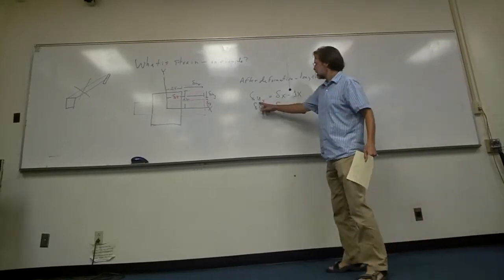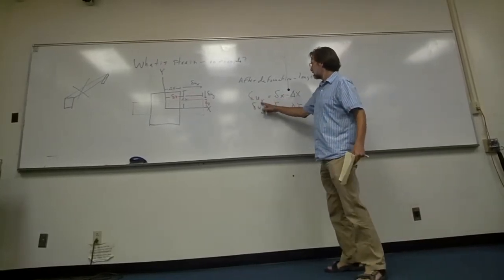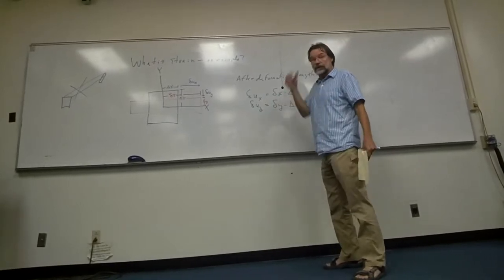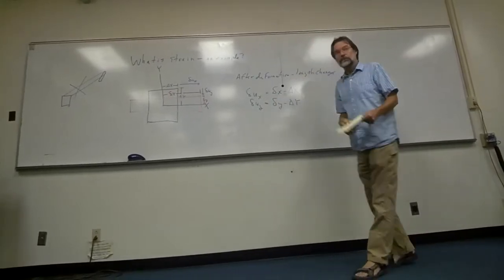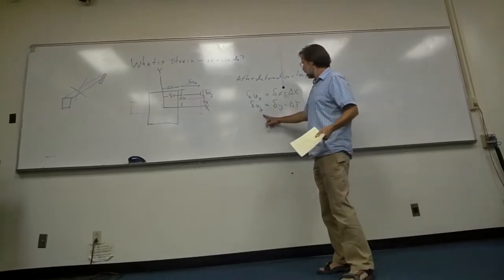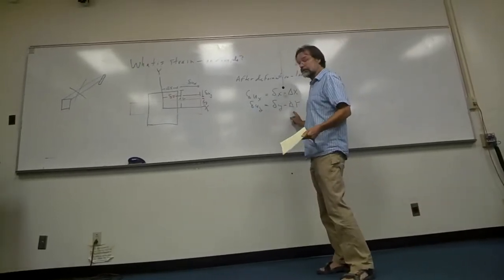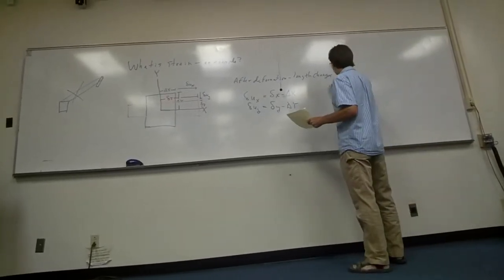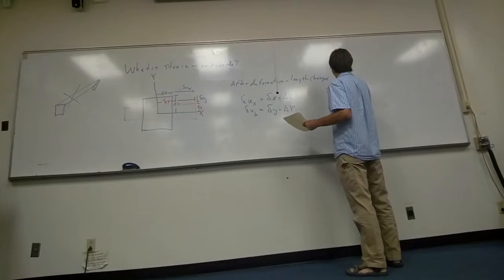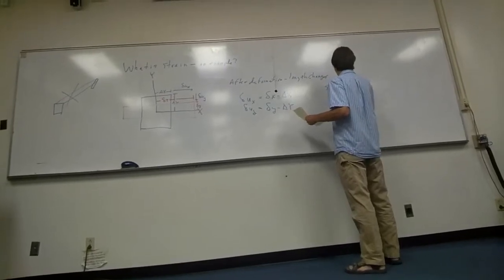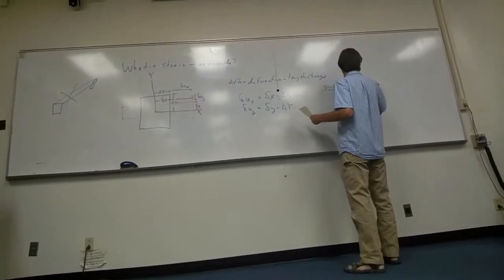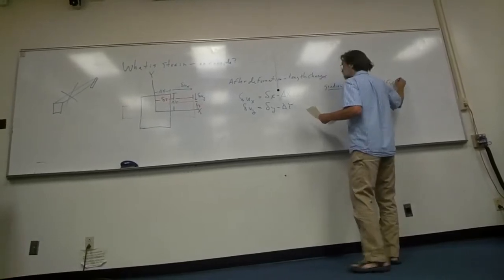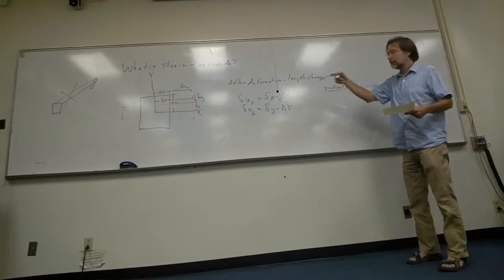Or little delta u y equals little delta y minus big delta y. So the displacement in the x-direction is the final position minus the initial. Or the displacement in the y-direction is the final position minus the initial position. A gradient in the displacement. These are components, right, in a direction.